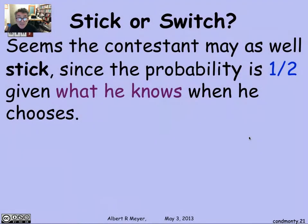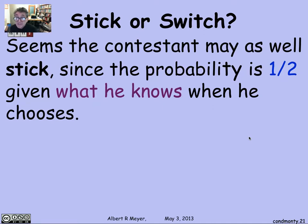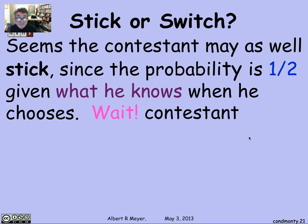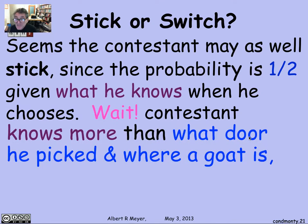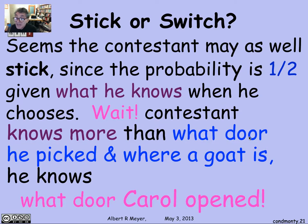That's confusing. It seems the contestant may as well stick, because at the point of deciding whether to stick or switch — knowing where the goat is and what door they picked — it's 50-50. The probability that the prize is at the door they picked is one half, so it doesn't matter if they stay or switch to the unopened door. But wait — that's not right, because the contestant doesn't just know what door they picked and that there's a goat behind a certain door. They know that Carol specifically opened that door, and that's how they learned the goat was there.